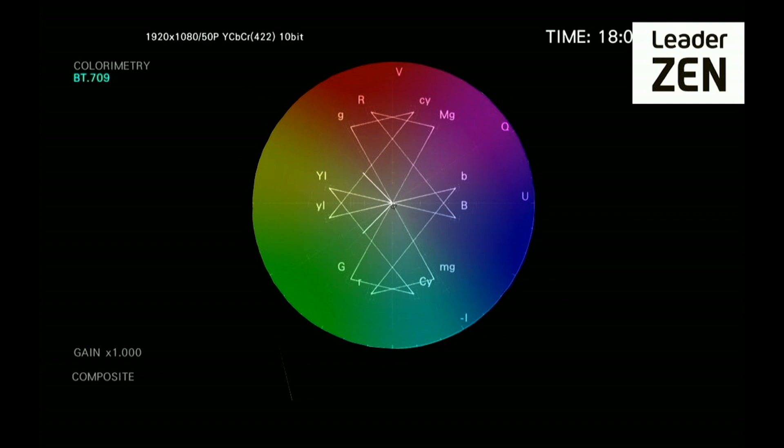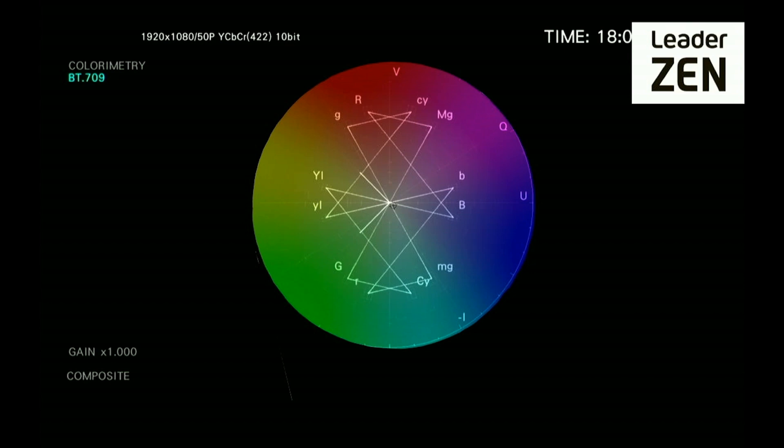Hue, saturation, and lightness, also known as HSL, is an alternative representation of the RGB color model. Hue defines color on the basis of its position in the spectrum.